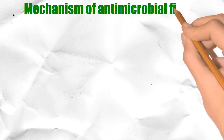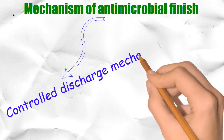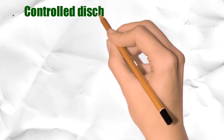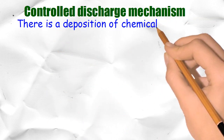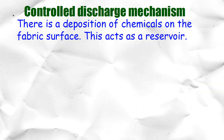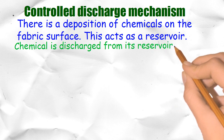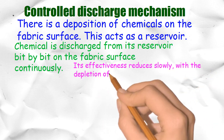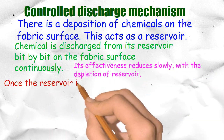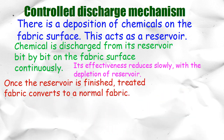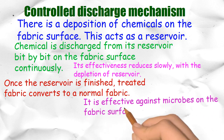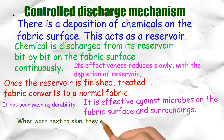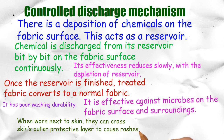Mechanism of antimicrobial finish — controlled discharge mechanism: there is a deposition of chemicals on the fabric surface, which acts as a reservoir. The chemical is discharged from its reservoir bit by bit onto the fabric surface continuously. Its effectiveness reduces slowly with the depletion of the reservoir. Once the reservoir is finished, the treated fabric converts to a normal fabric. It is effective against microbes on the fabric surface and surroundings, but has poor washing durability. When worn next to skin, these chemicals can cross the skin's outer protective layer and cause rashes or irritation.